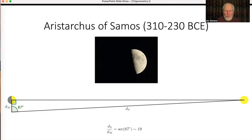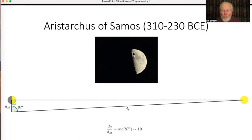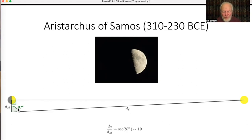It was a really clever idea, but completely wrong — the sun is actually about 400 times further away than the moon. It was hopelessly optimistic to think he could determine when the terminator was exactly straight, especially with the sun shining. You'd need to determine it to within a few minutes of time. The real angle is more like 88 degrees 50 minutes, much closer to a right angle, and really impossible to tell by naked eye.